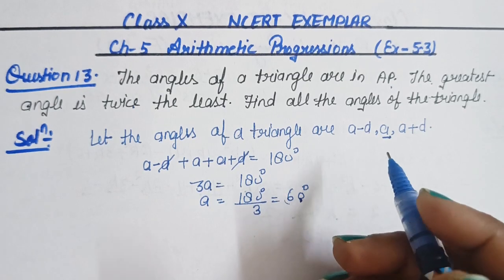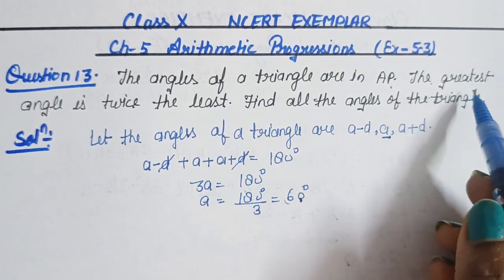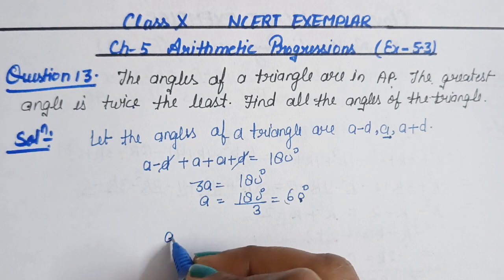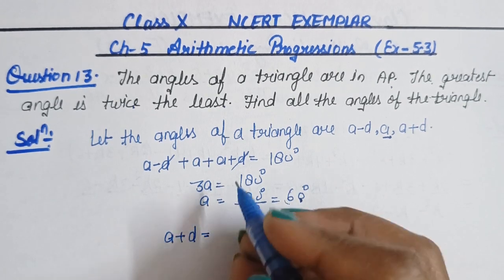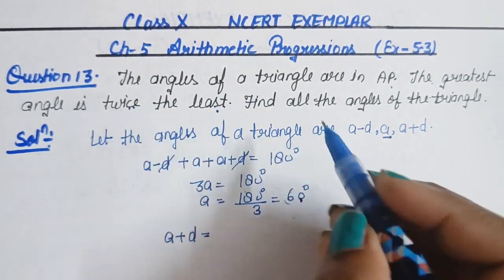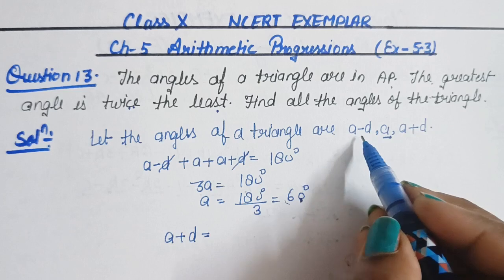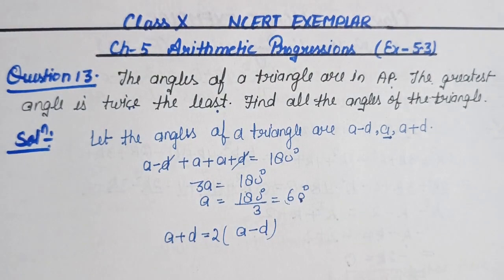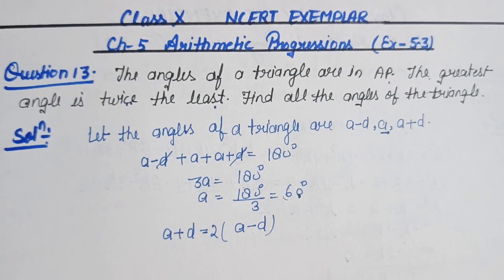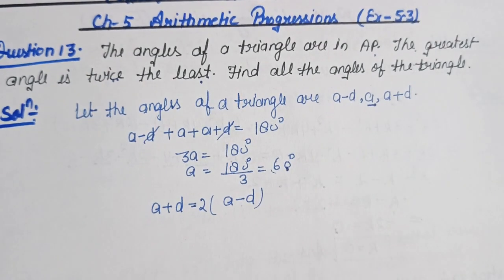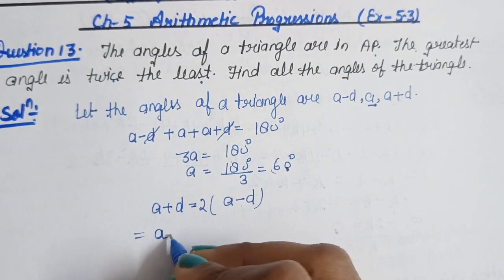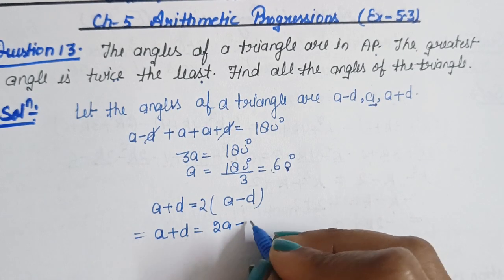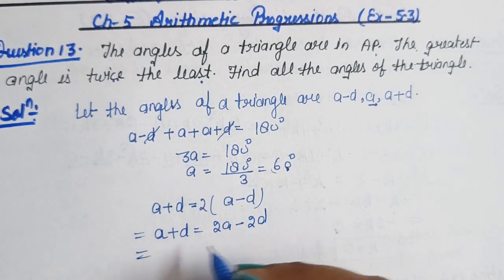Now for the second condition: the greatest angle is twice the least. The greatest angle is A + D and the least angle is A − D. So we set up the equation: A + D = 2(A − D), which gives A + D = 2A − 2D.